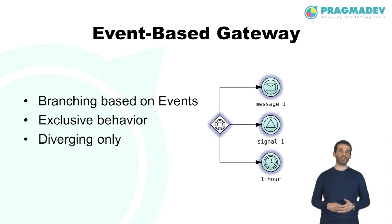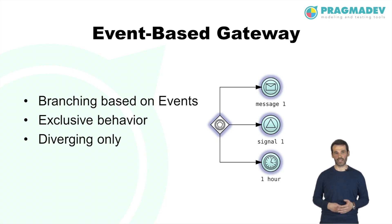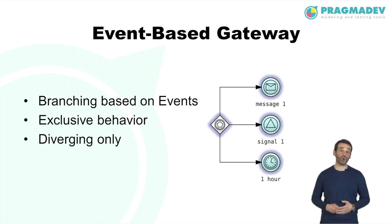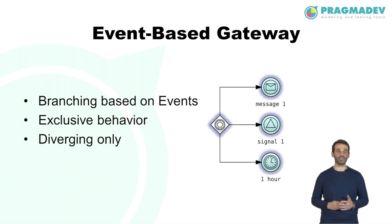The event-based gateway represents a branching point where alternative paths following the gateway are based on events that occur, rather than the evaluation of expressions. A specific event determines the path taken. When the first event in the event-based gateway configuration is triggered, the path following that event is taken, and all remaining paths are no longer valid. Essentially, the event-based gateway acts as an exclusive gateway triggered by events, and unlike other gateways, it can only be diverging.